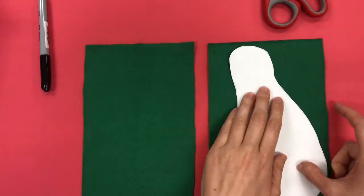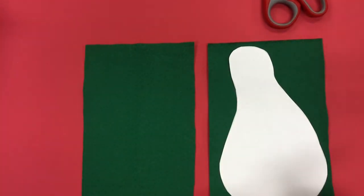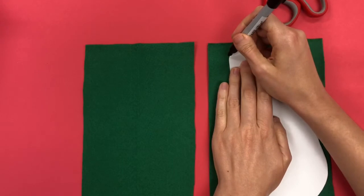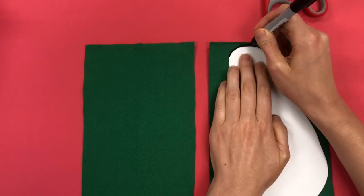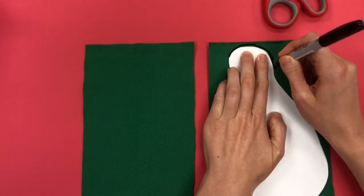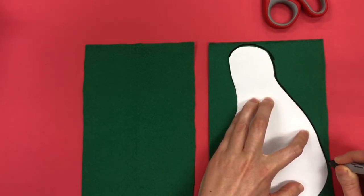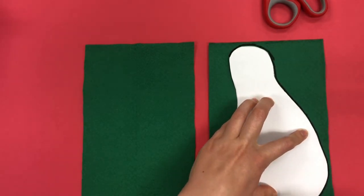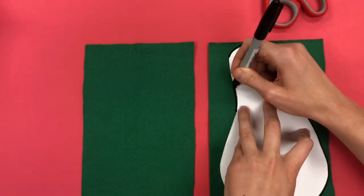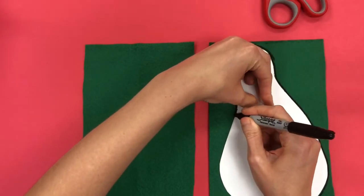What I want to do is trace around my pattern with a sharpie and I'm going to do that by holding my pattern still with my hands. I don't want that pattern to move and I'm just very carefully tracing all the way around.